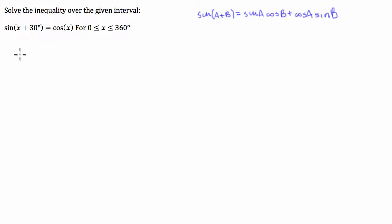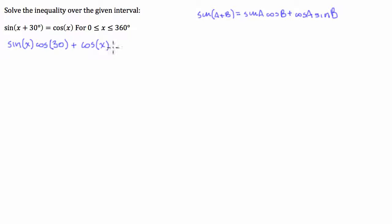So a plus b expands to: sine of x times cosine of 30, plus cosine of x times sine of 30. And this is all equal to cosine of x.